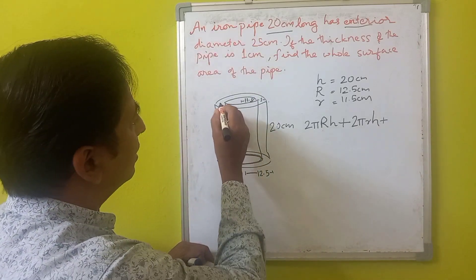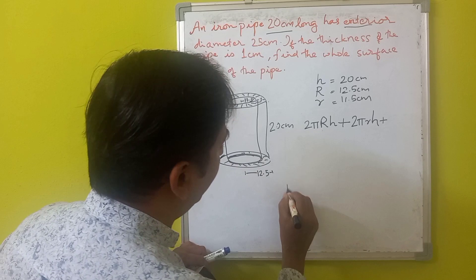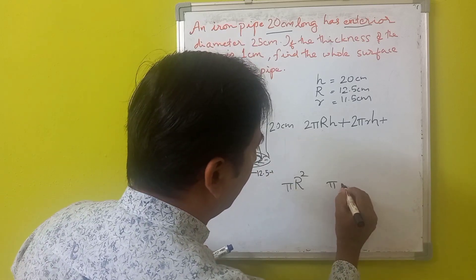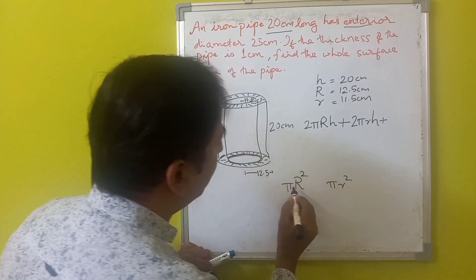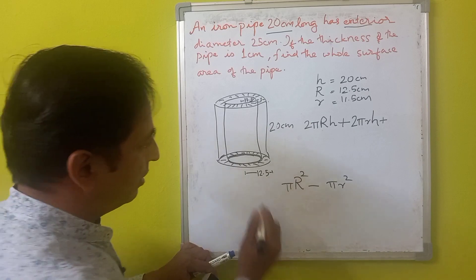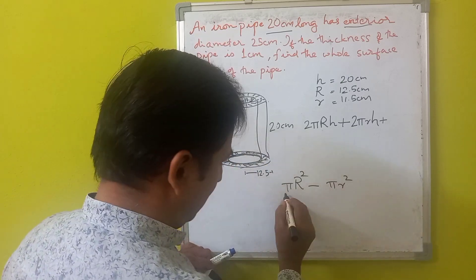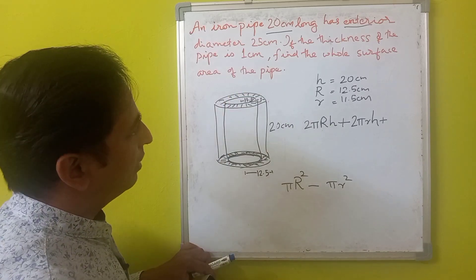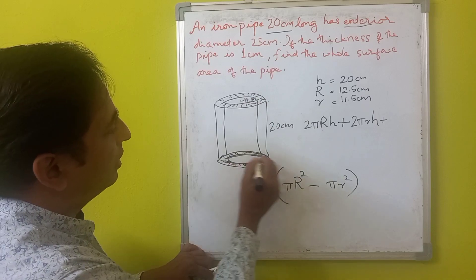We also need to add the surface area of the two annular ring portions at the top and bottom. The bigger circle has an area of πR² and the smaller circle has an area of πr². Since the inner area is hollow, the area of each ring is πR² minus πr². As there are two such rings, we multiply by 2: giving 2(πR² − πr²).